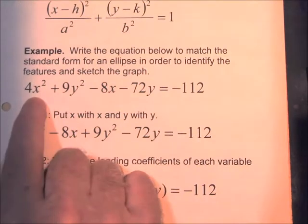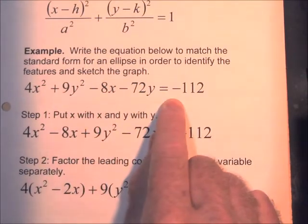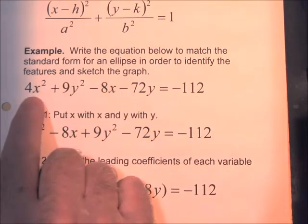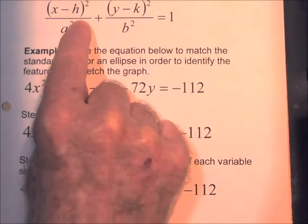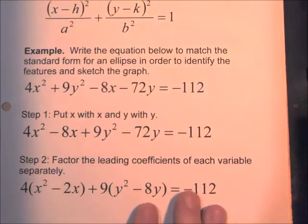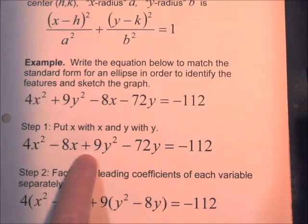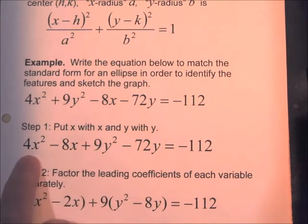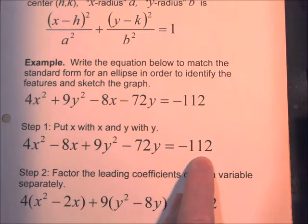Here's an example: 4x squared plus 9y squared minus 8x minus 72y equals negative 112. It looks like it's going to be an ellipse because the x squared and y squared terms are both positive. We want to match it to the standard form so we can identify the features and sketch the graph. First, we rearrange so the x terms are together and the y terms are together: 4x squared minus 8x plus 9y squared minus 72y equals negative 112.